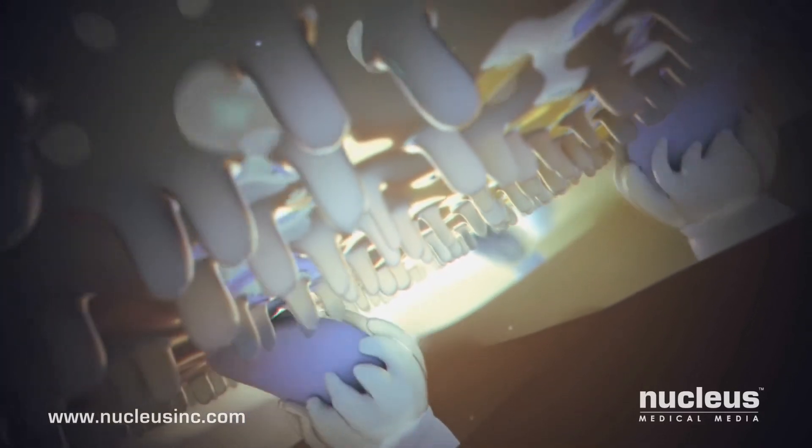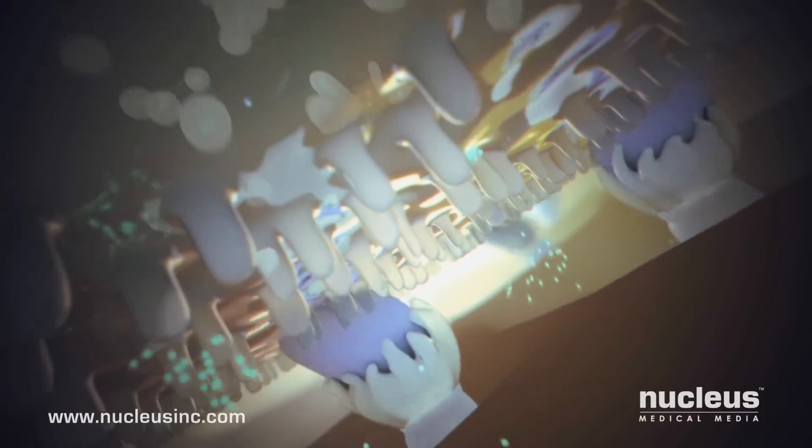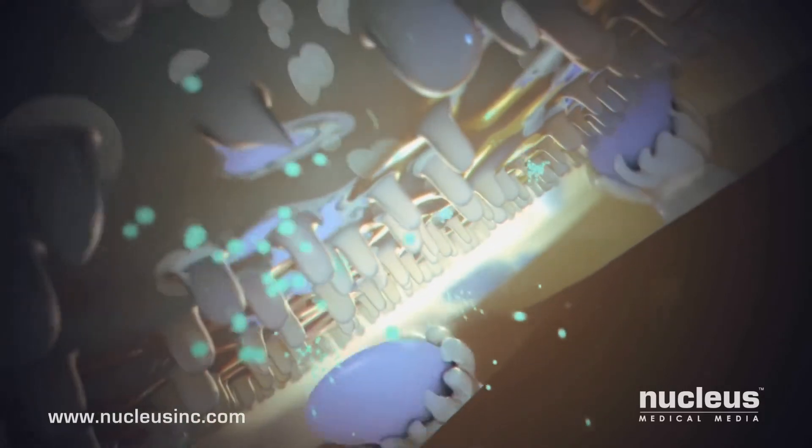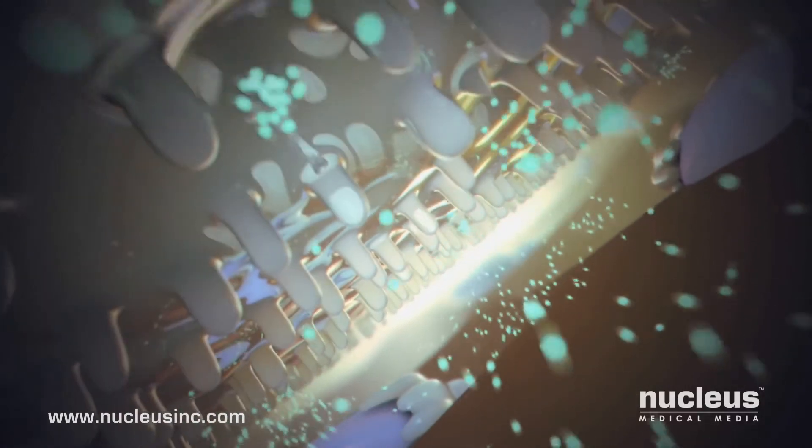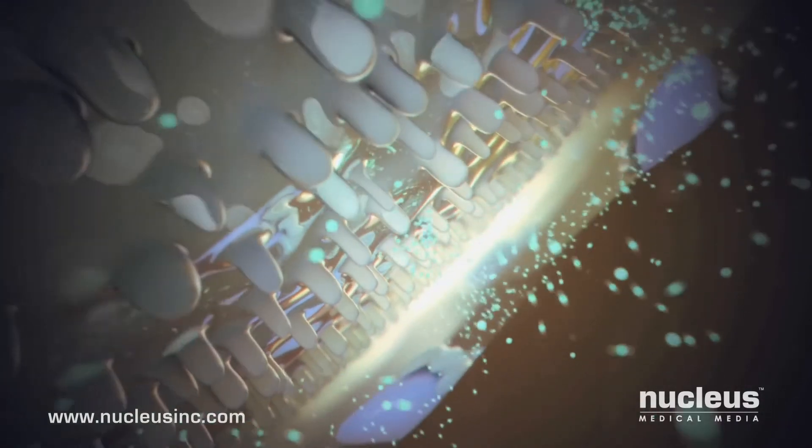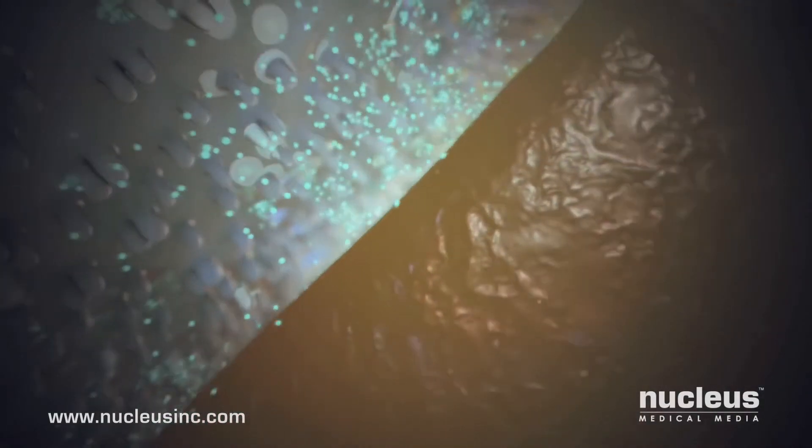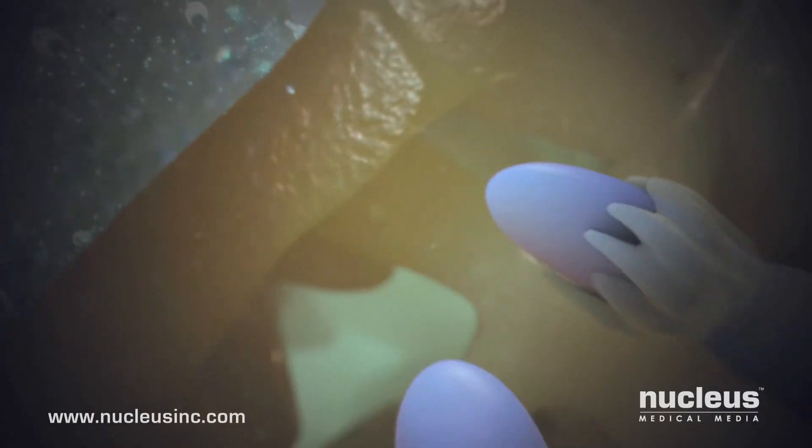Next, the egg releases chemicals that push other sperm away from the egg and create an impenetrable fertilization membrane. As the reaction spreads outward, the zona pellucida hardens, trapping any sperm unlucky enough to be caught inside.